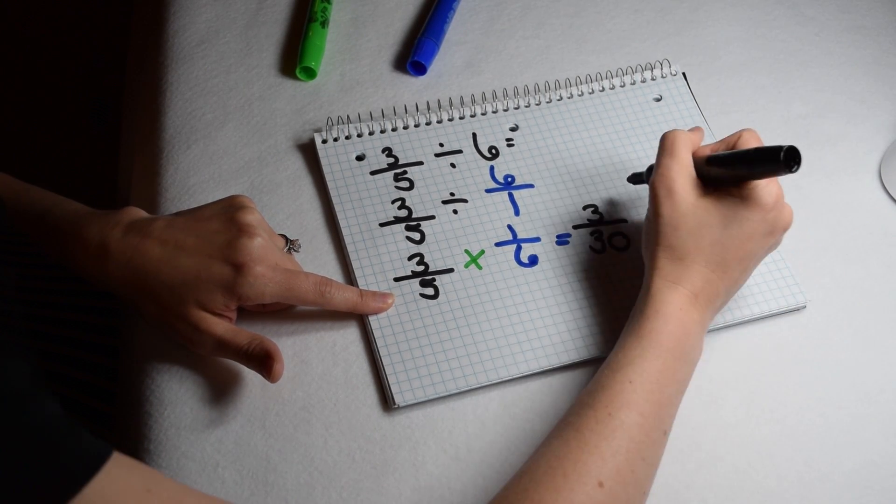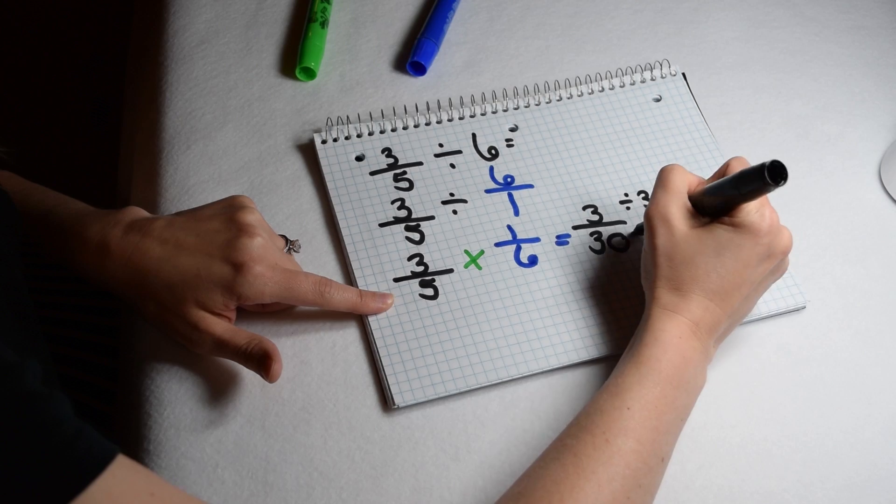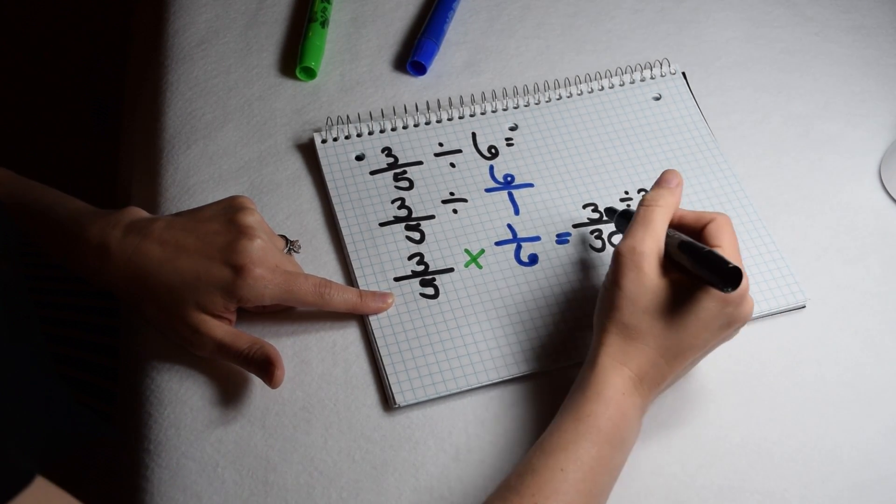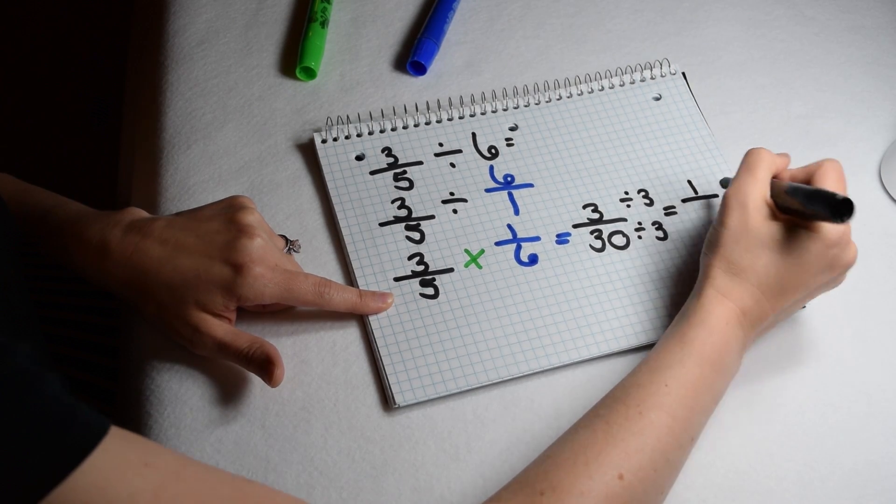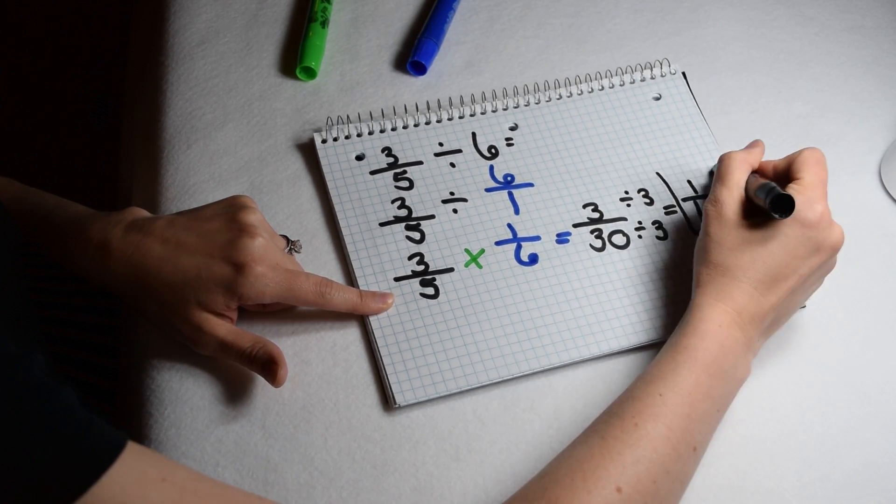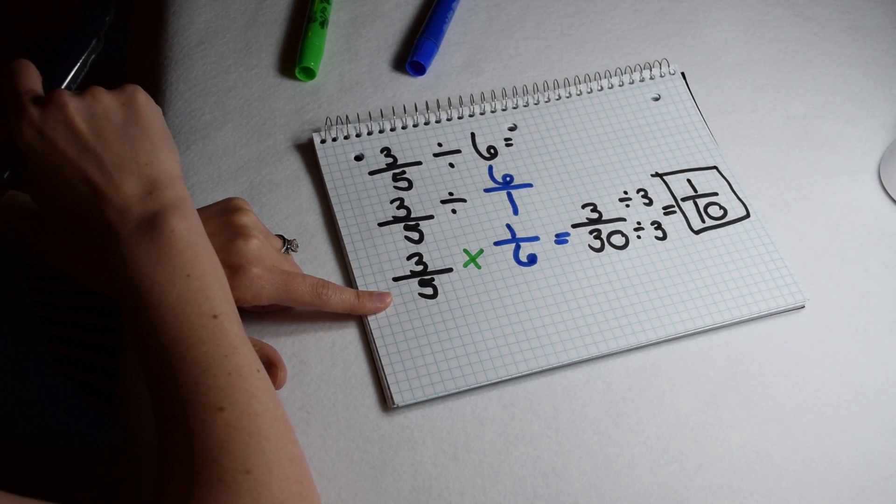Three over thirty isn't in lowest terms, so we're going to have to simplify. Three is the greatest common factor of three and thirty, so I can divide both the numerator and the denominator by three. Three divided by three gives me one. Thirty divided by three gives me ten. So in lowest terms, our solution comes out to be one tenth.